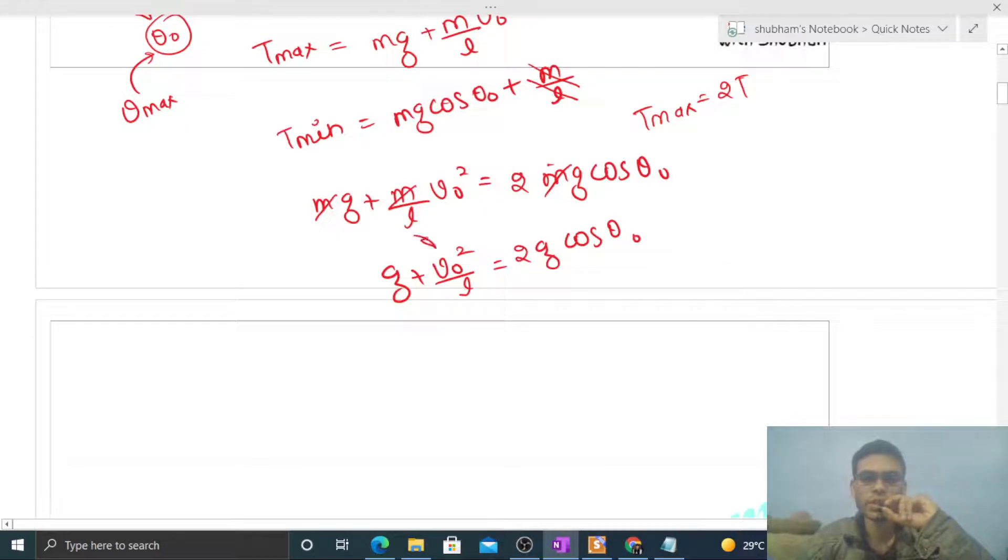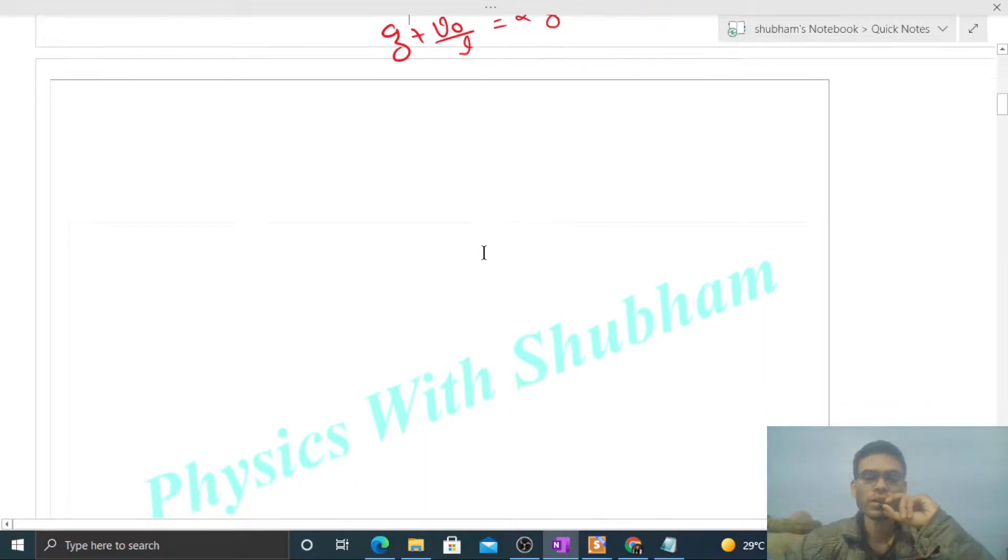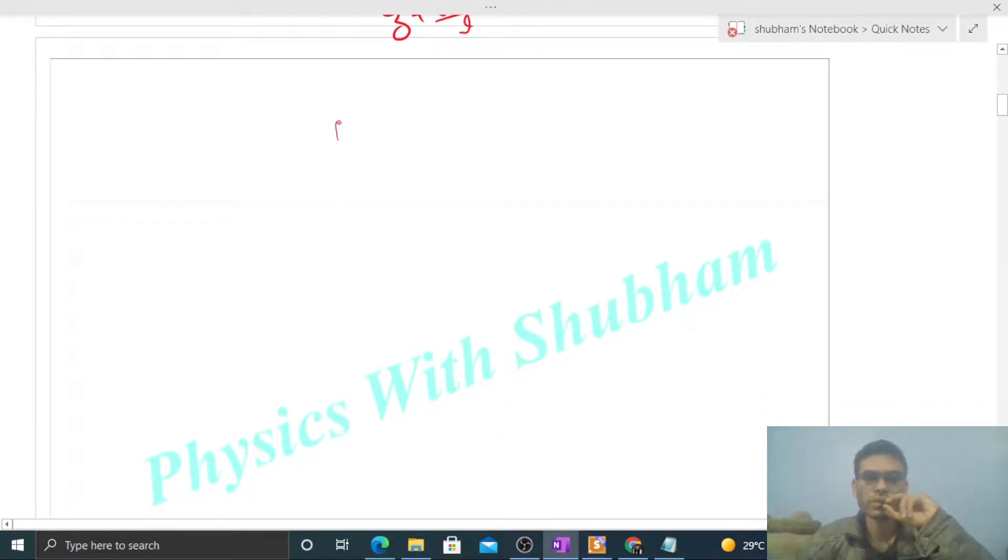Now v naught is the speed at the mean position. We can find this using conservation of mechanical energy. The pendulum starts from the extreme position where speed is zero, and at mean position the speed becomes v naught. So what is the decrease in potential energy?